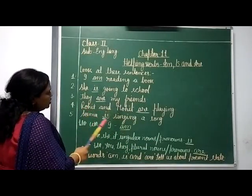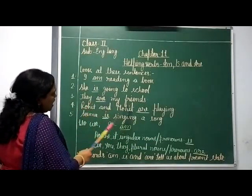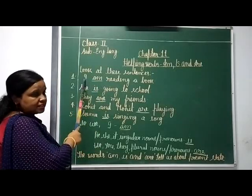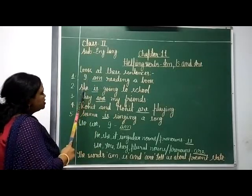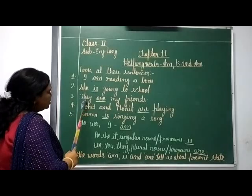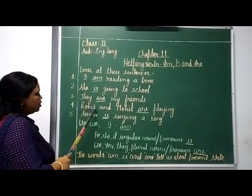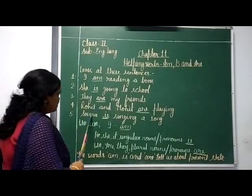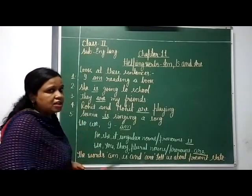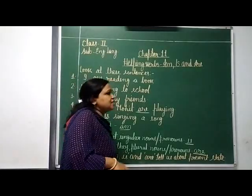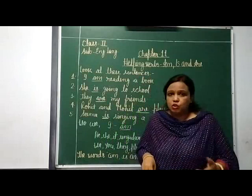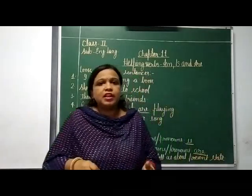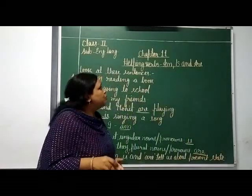These helping words are used with nouns and pronouns. You can see here: 'I' is a pronoun, 'She' is a pronoun, 'He' is also a pronoun. Rohit and Mohit are nouns, and Sima is a noun. So am, is, and are are used with nouns and pronouns.